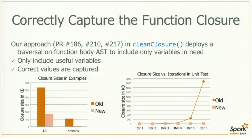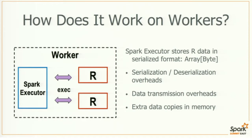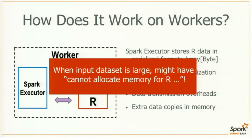The second thing I want to talk about focuses on the worker side. Currently, Spark stores data in serialized format inside the Spark Executor, which communicates with multiple R processes through pipes or sockets. This leads to serialization overheads, data transmissions back and forth, and extra data copies in different processes. Sometimes, with really large input datasets cached into Spark memory, you might encounter an error: cannot allocate memory for R.